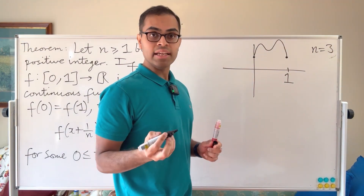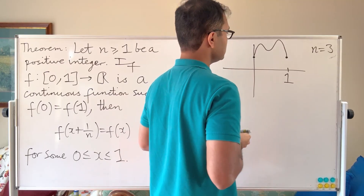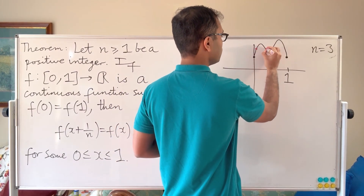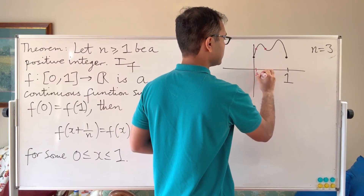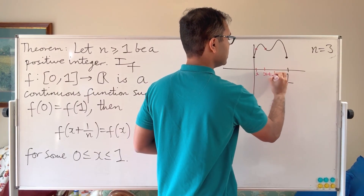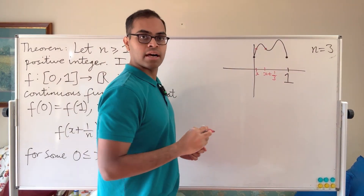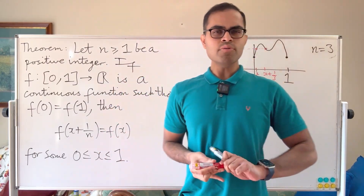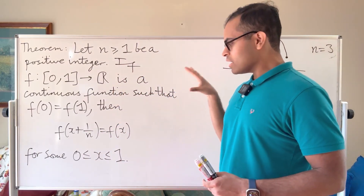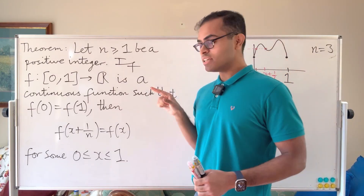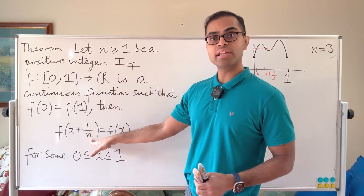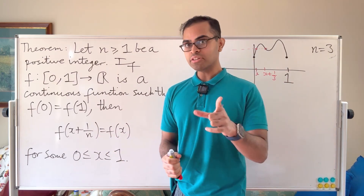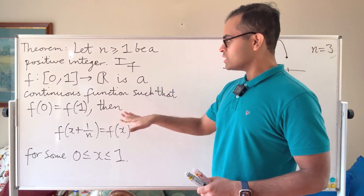So we're looking at 1/3 as the difference, and we can imagine two points 1/3 apart: this point at x and this point at x + 1/3, where the two values of f match up and lie on the same horizontal line parallel to the x-axis. Now, how do we rigorously prove this? And one cool thing is to ask whether this is true if 1/n is replaced by a number not of the form 1/n — we'll get to that.